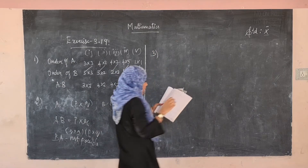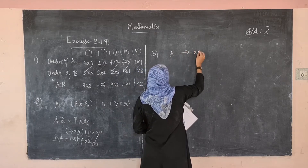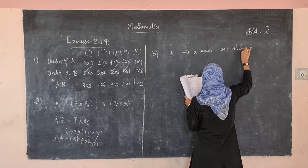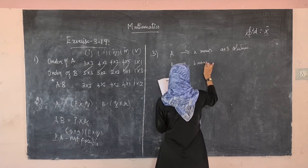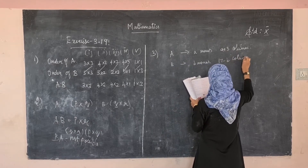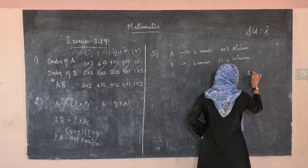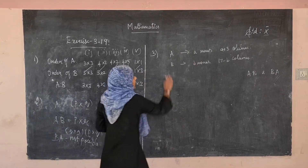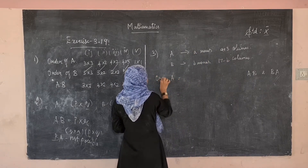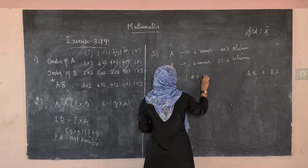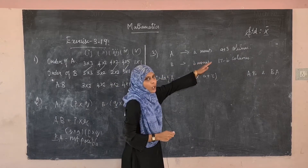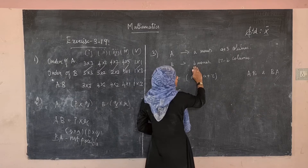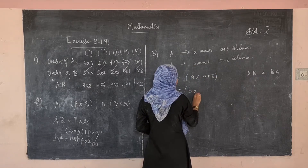In the third sum, matrix A has 'a' rows and (a+3) columns, so the order of A is a×(a+3). Matrix B has 'b' rows and (17−b) columns, so the order of B is b×(17−b). They have given that both AB and BA are possible.